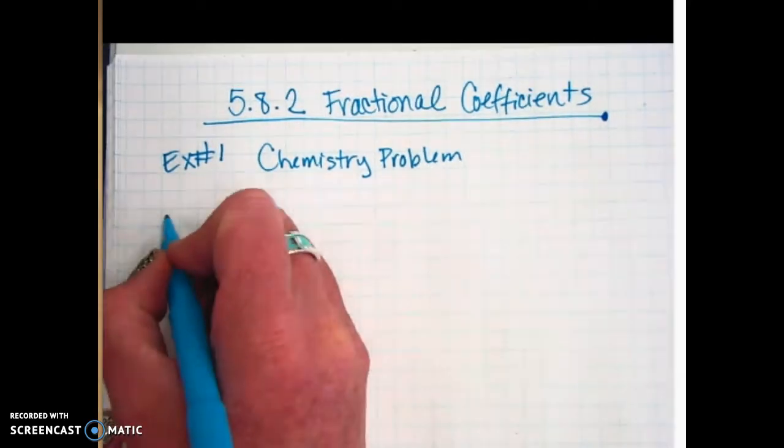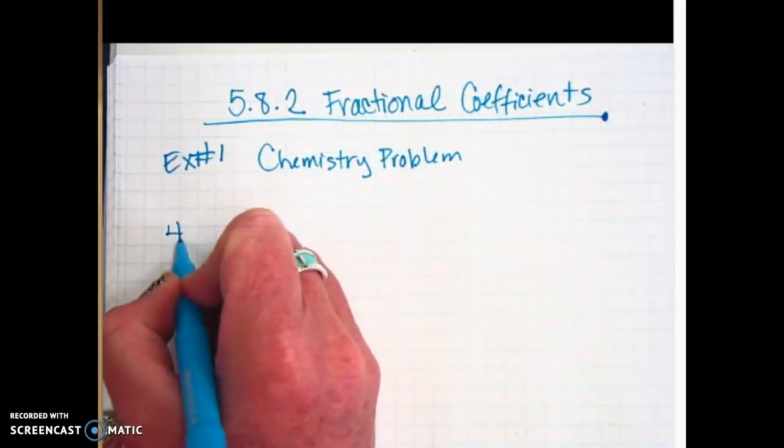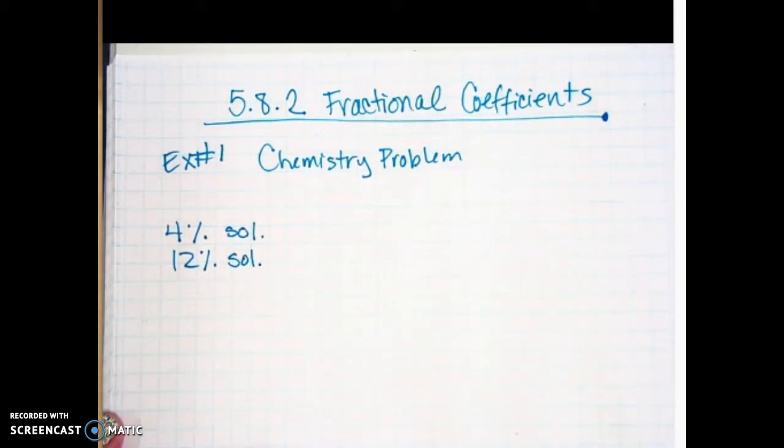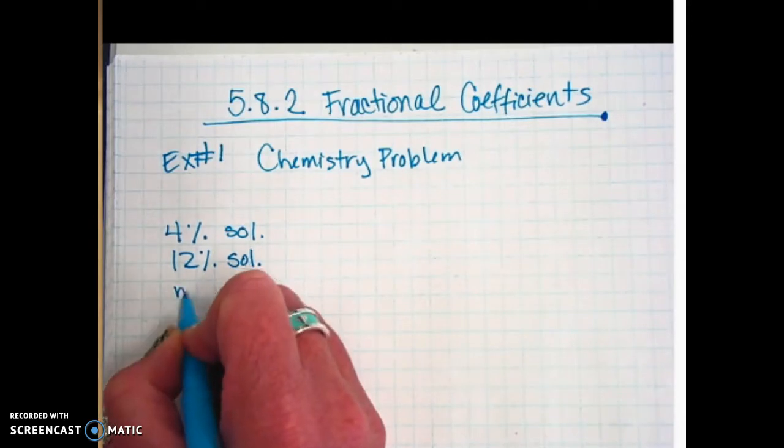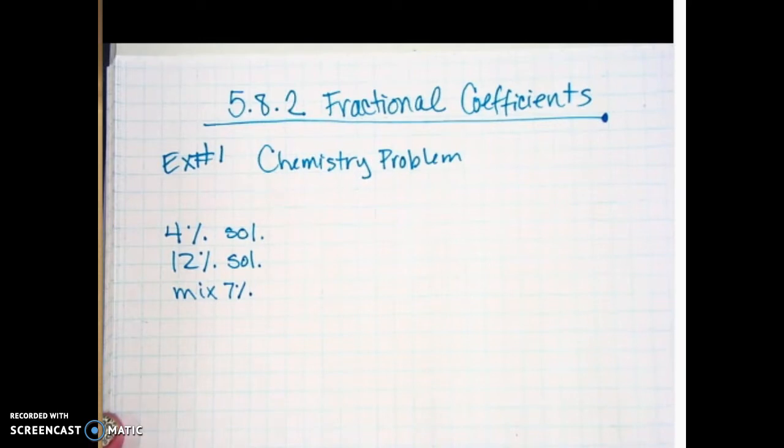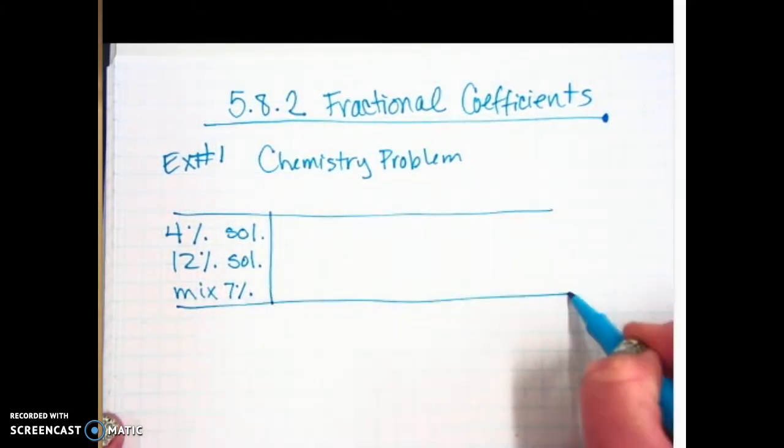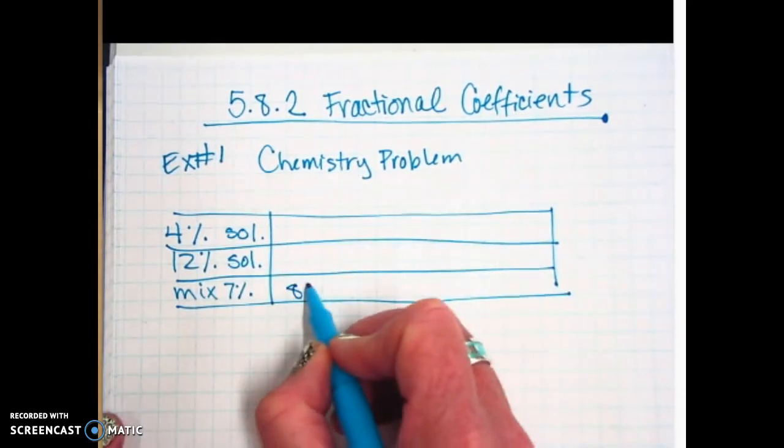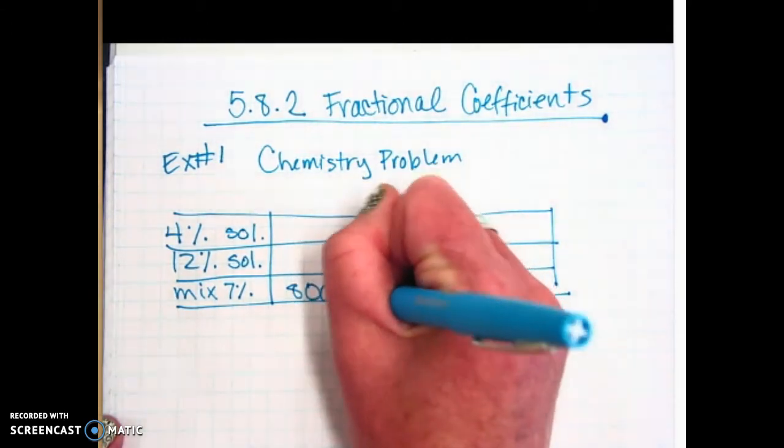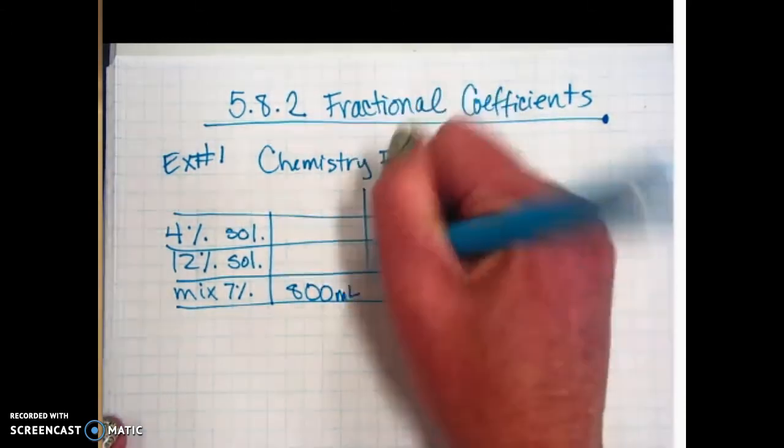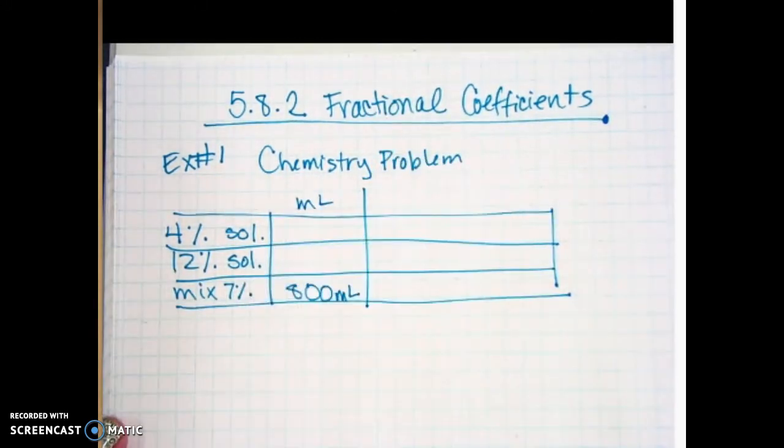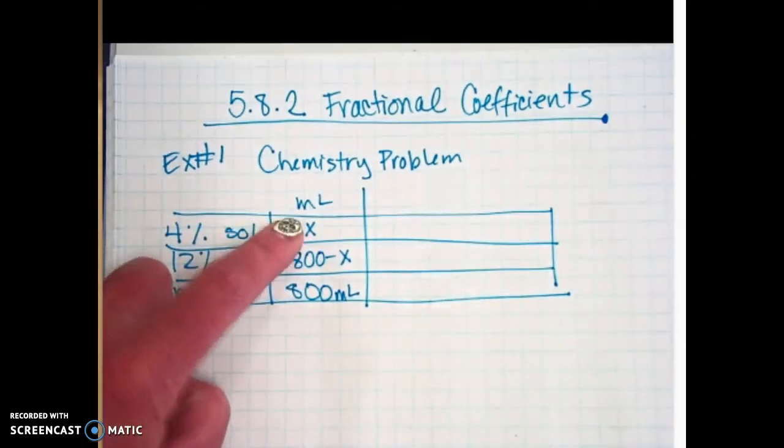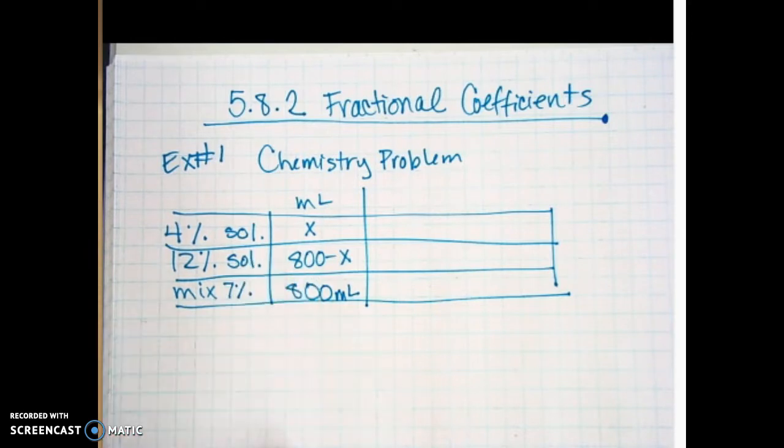There are two that she's going to mix. She's going to take the 4% and the 12% solution and she wants to have a final mixture of 7%. One way to combat this is to make a little chart. The final mixture, they tell us, is going to be 800 milliliters of solution. But they don't tell us how much of each of the other two. So in the milliliters, one of them will be x and the other one will be 800 minus x. So whatever the difference is, if this one's 100, this one's going to be 700. If this one's 200, this one's going to be 600 and so on.